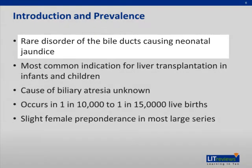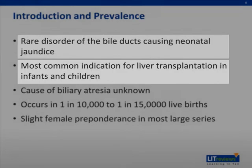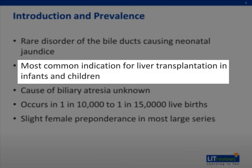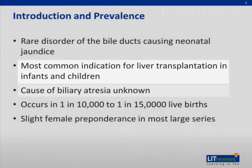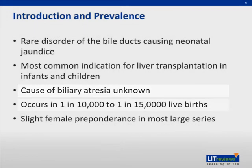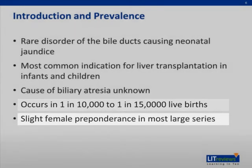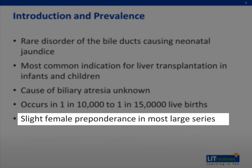Biliary atresia is a rare disorder of the bile ducts causing neonatal jaundice. It is the most common indication for liver transplantation in infants and children. Although there has been intensive investigation, the cause of biliary atresia is unknown. It occurs in 1 in 10,000 to 1 in 15,000 live births. Several studies have demonstrated a slight female preponderance.